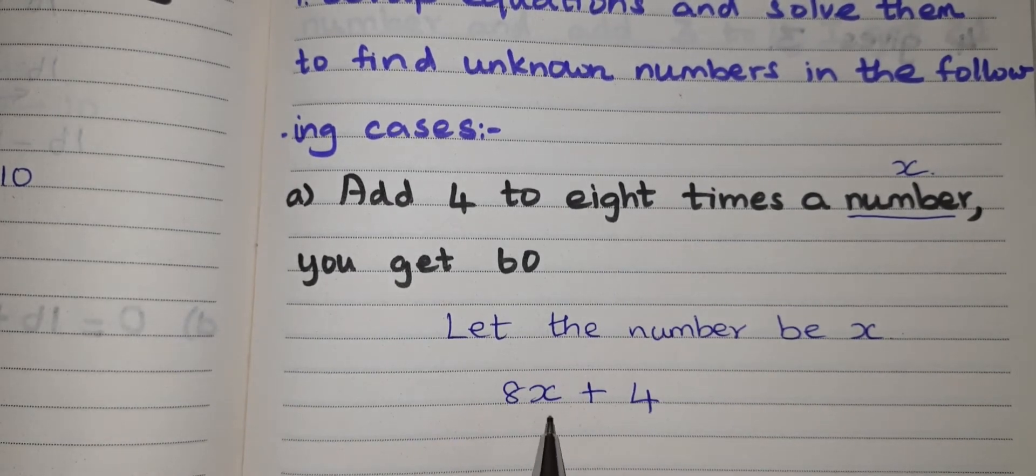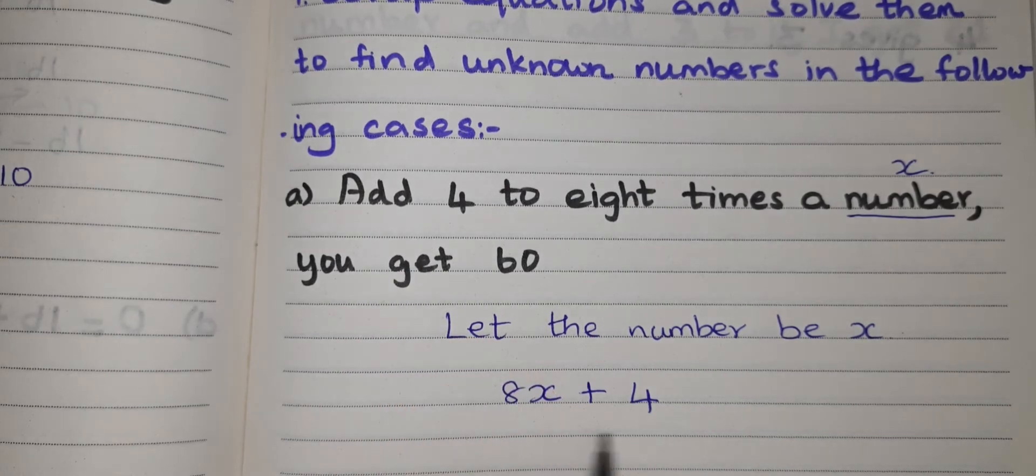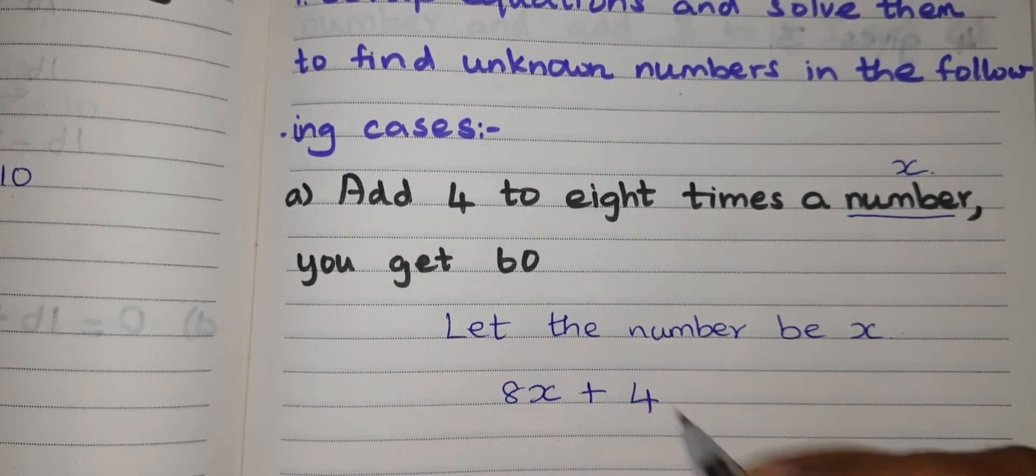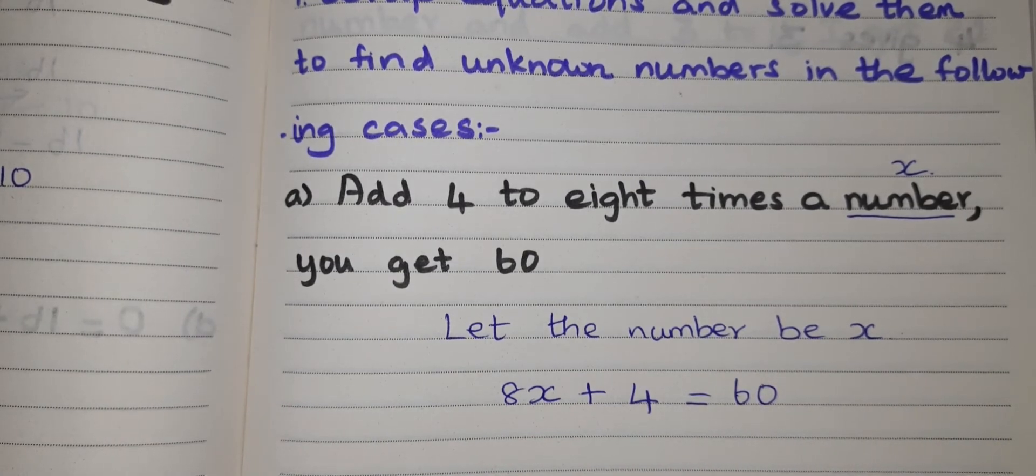This is 8 times a number, the number is X. Then they have given add 4, plus 4. You get 60. Get 60 means equal to 60. This is the equation.